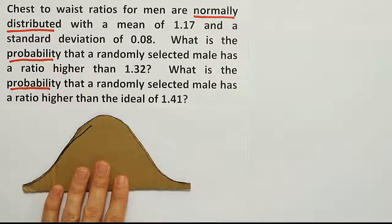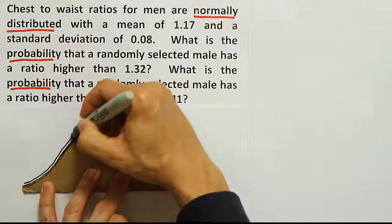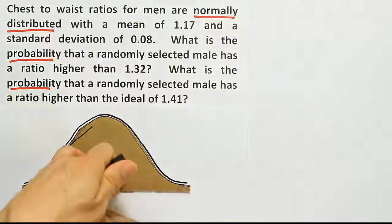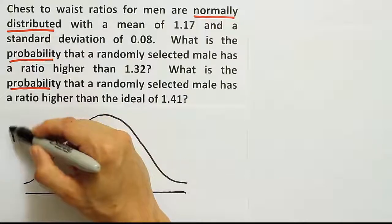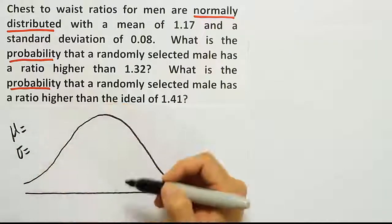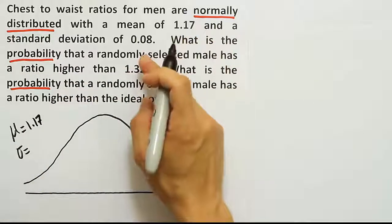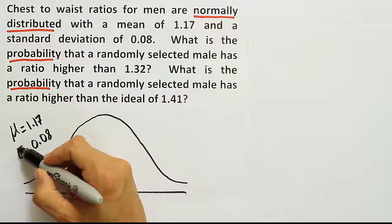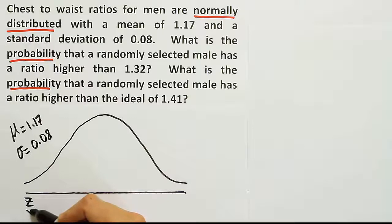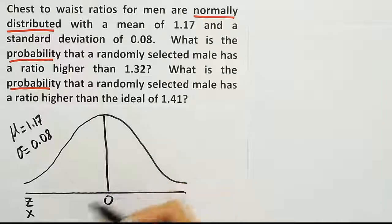Okay, so putting my little bell curve outline there. Let's draw the shape. Okay, now the mean and the standard deviation will be the same for both problems. It says that the mean is 1.17 and a standard deviation of 0.08. Now at that point we want to label a z-axis and an x-axis. The z-axis is centered at 0, of course. The x-axis is centered at the mean of 1.17.